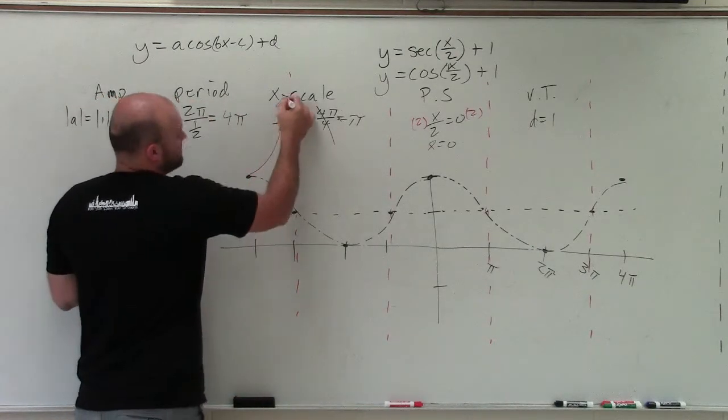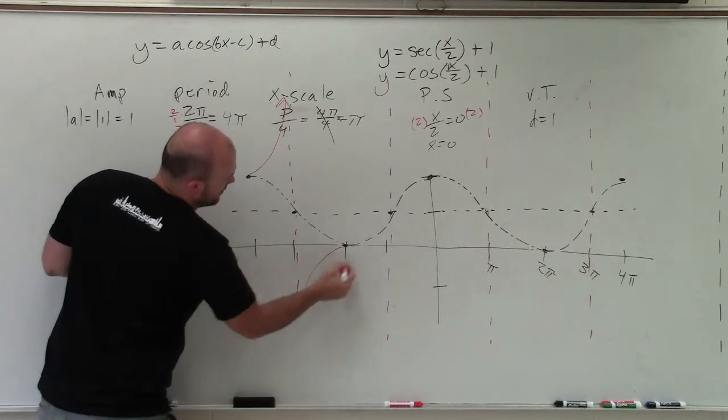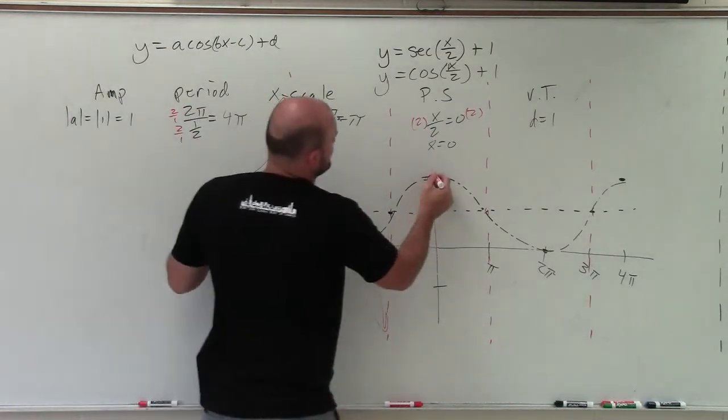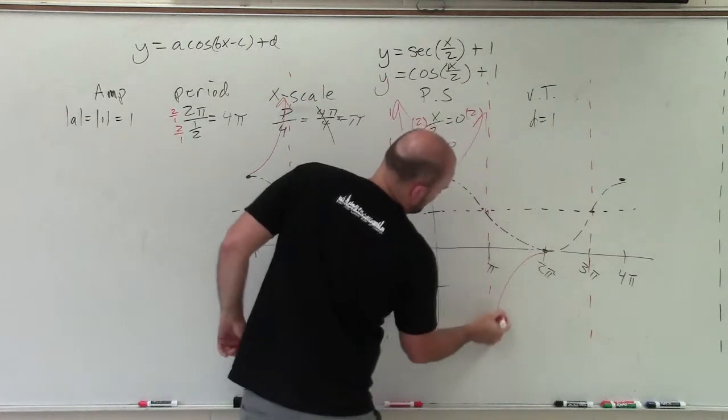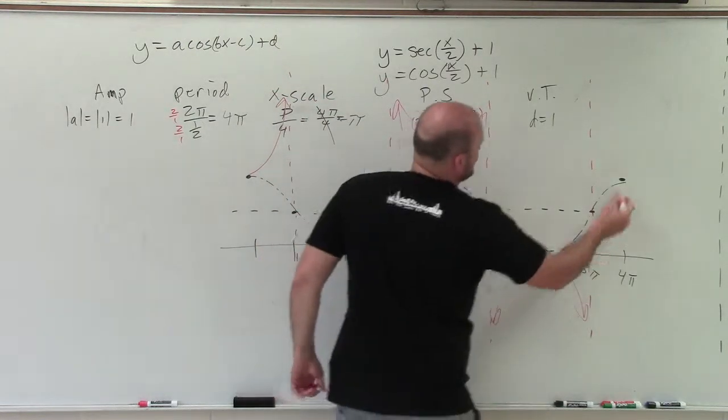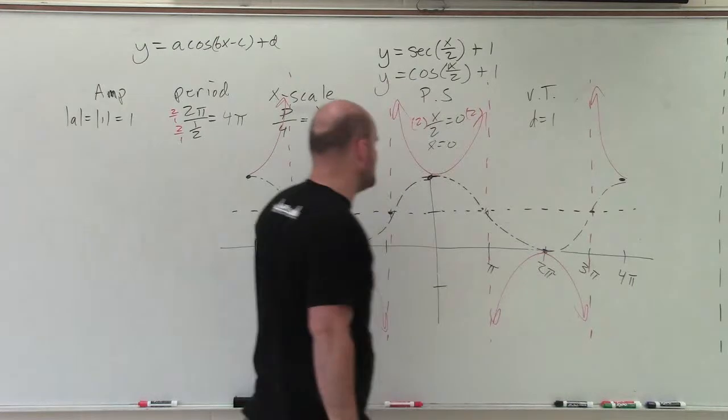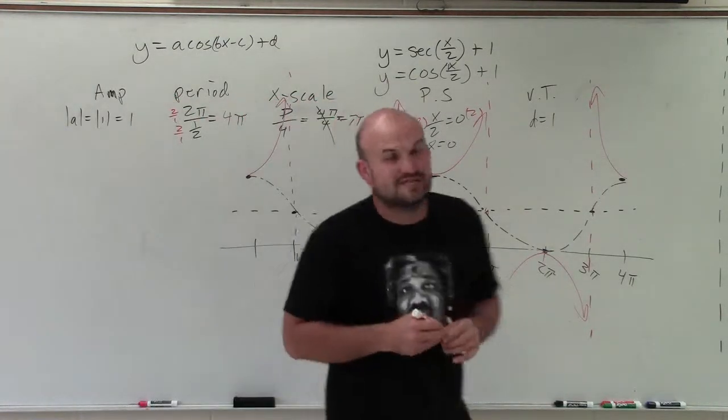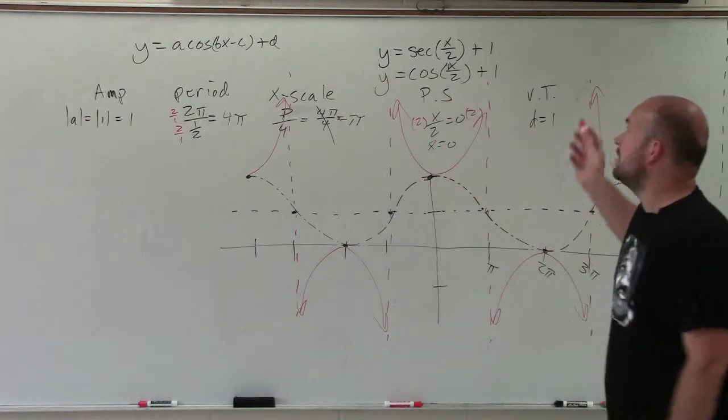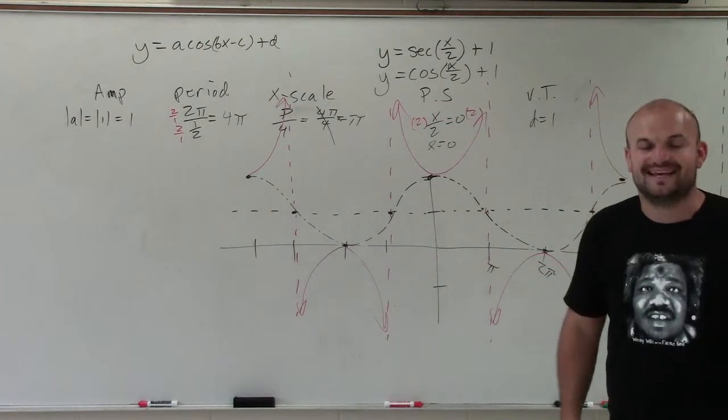we need to make sure we take our reciprocal function and create asymptotes. Then, at the maximum and the minimum, we need to have our graphs approach our asymptotes in the opposite direction. And obviously, if you want to check this, you can use a table of values. But regardless of the black graph, you can now see in the red is what our graph for secant of x divided by 2 plus 1 will look like. Thanks.